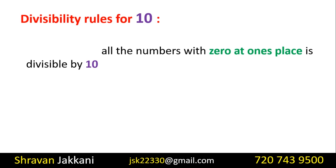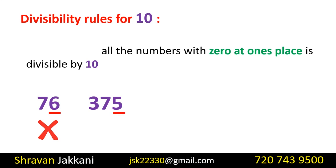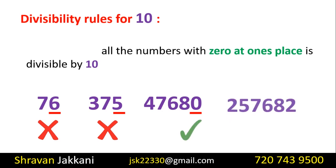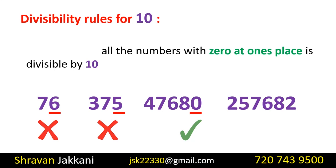Divisibility rule of 10: A number is divisible by 10 if its ones place is 0. So if the number ends in 0, it is divisible by 10. If it does not end in 0, it is not divisible by 10.